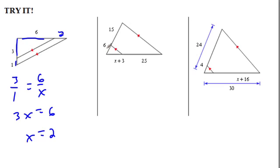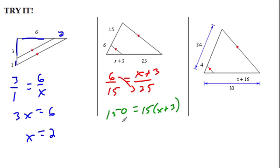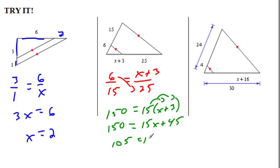Let's try the next one. I can say 6 is to 15 as X plus 3 is to 25. So 6 is to 15 as X plus 3 is to 25. Cross multiply: 6 times 25 gives me 150. Then 15 times (X plus 3) — distribute — gives 150 equals 15X plus 45. Subtract 45 from both sides to get 105. 15 goes into 105 seven times, so X equals 7.